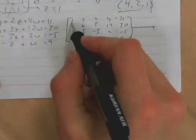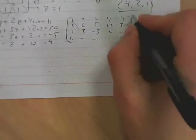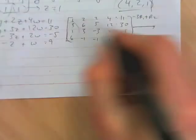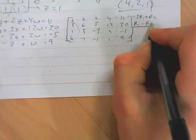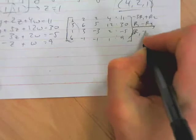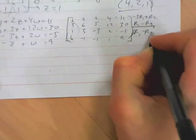So we're taking negative 3 times row 1 plus row 2. We're taking row 1 minus row 3. We're taking 6 times row 1 minus row 4.